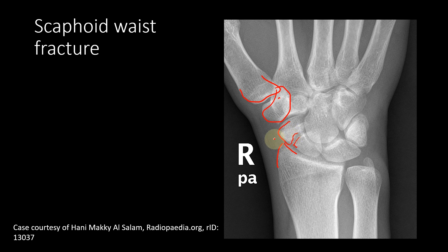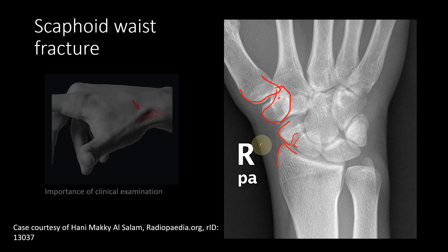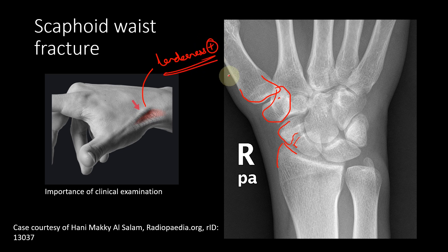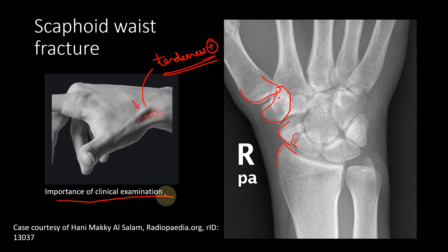One of the most important clinical features is tenderness over the scaphoid. If you find tenderness over the scaphoid even in the absence of an X-ray sign of fracture, you must treat it as a possible scaphoid fracture. This is one of the key reasons why clinical examination of the anatomical snuffbox is very important.